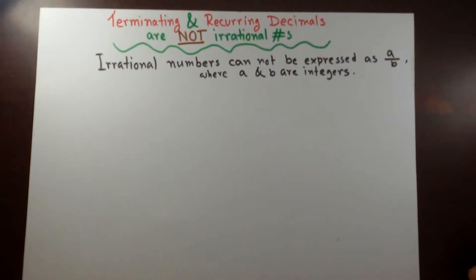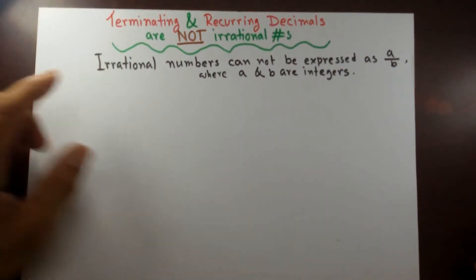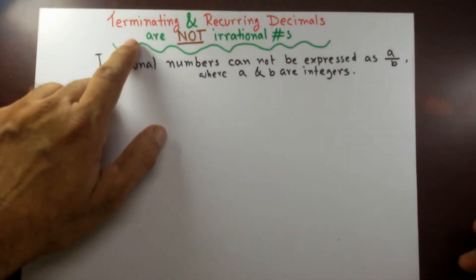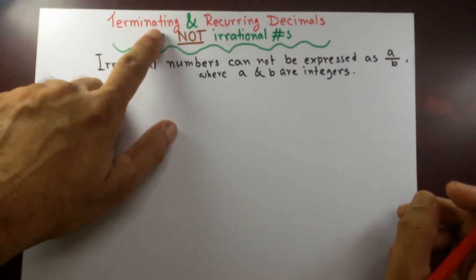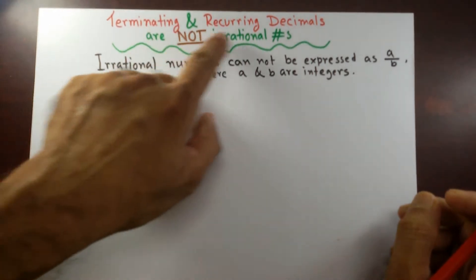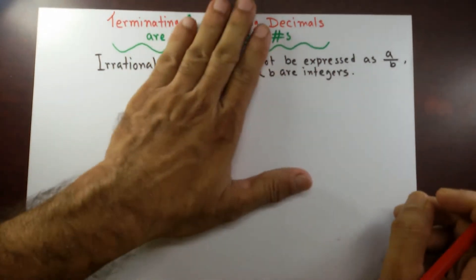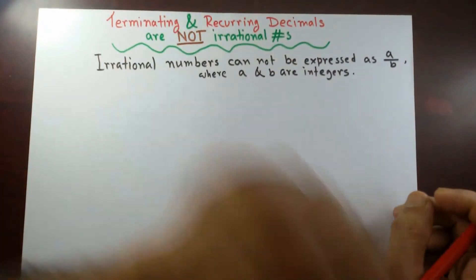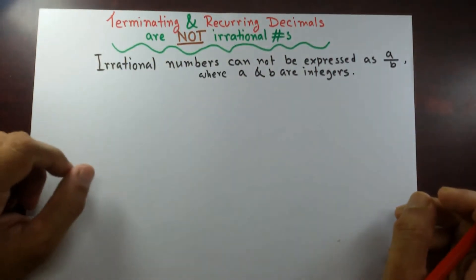Good morning! On today's lecture, I'll cover why terminating and recurring decimals are not irrational numbers.